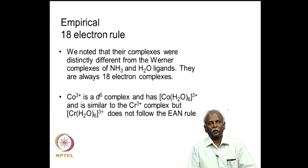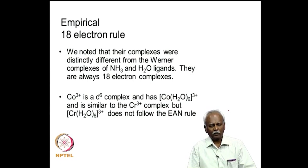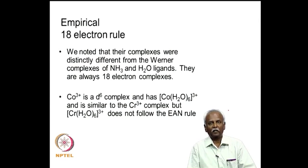What we have noticed in this series of complexes is that all of them end up with a total of 18 electrons around the metal atom, and this was the reason why people started talking about the 18 electron rule. The 18 electrons were generated by adding the number of electrons around the metal to the total number of electrons donated by the ligands.